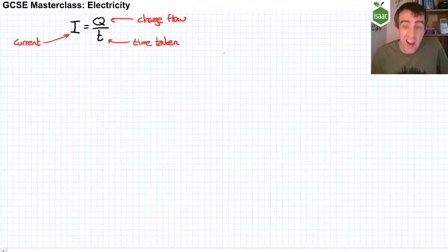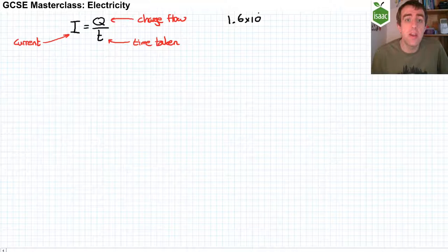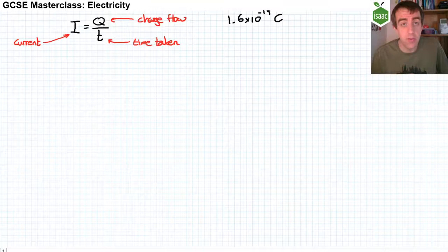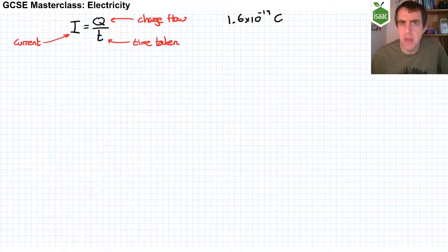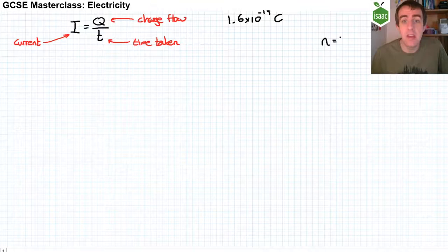Now the charge on an electron is very, very small and as electrons are the things that are actually flowing, that means that we're going to be dealing with some very small numbers. The charge on the electron is 1.6 times 10 to the negative 19 coulombs. And so we're going to be using standard form and we're going to be using things like nanocoulombs, maybe even picocoulombs. You need to remember that nano means 10 to the negative 9.